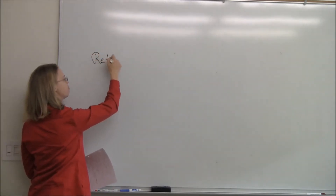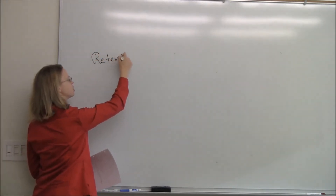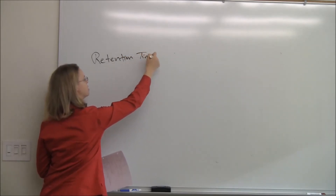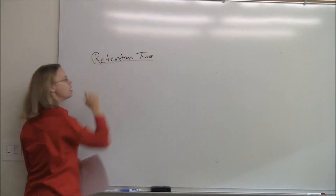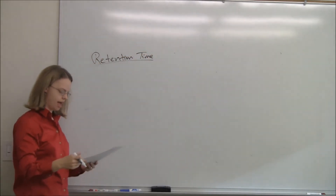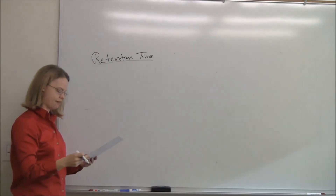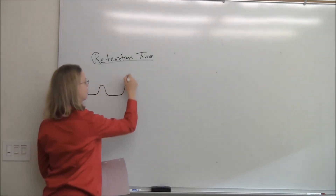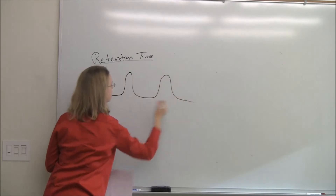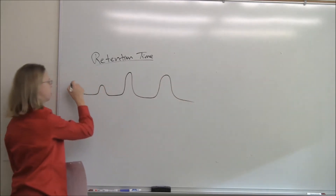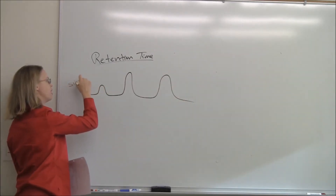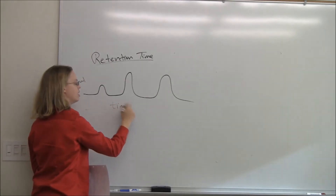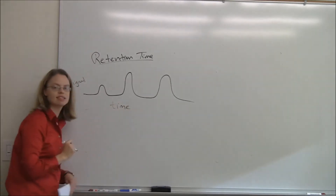In chromatography, what we measure is usually retention time — the time it takes for the analyte to come out. You'll get a chromatogram that looks something like this. There's some sort of signal we measure depending on the detector, and the x-axis is time.